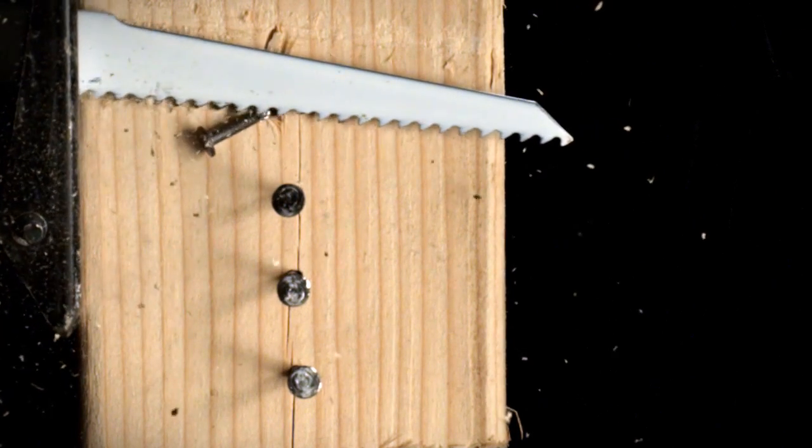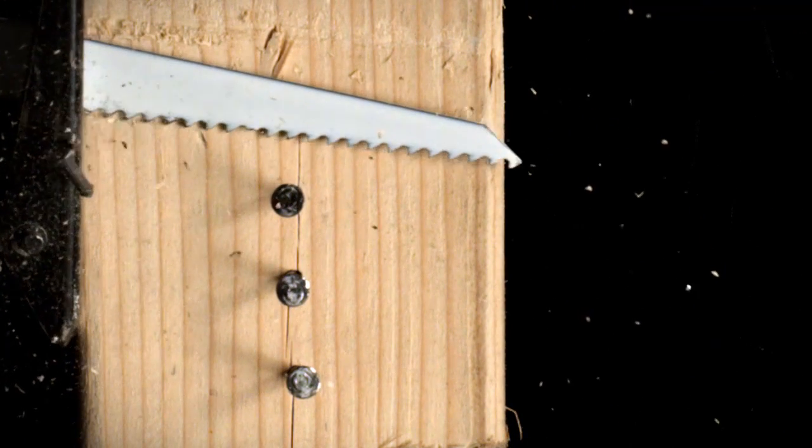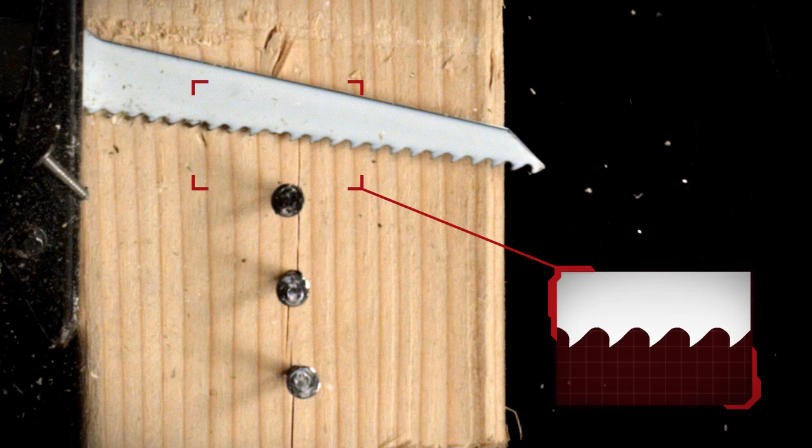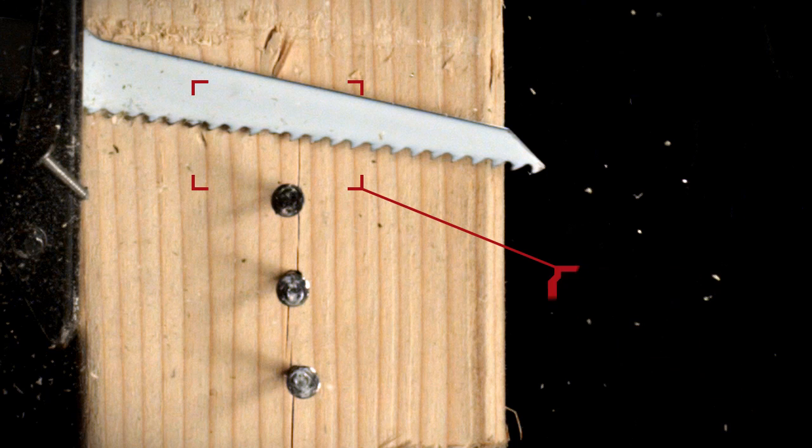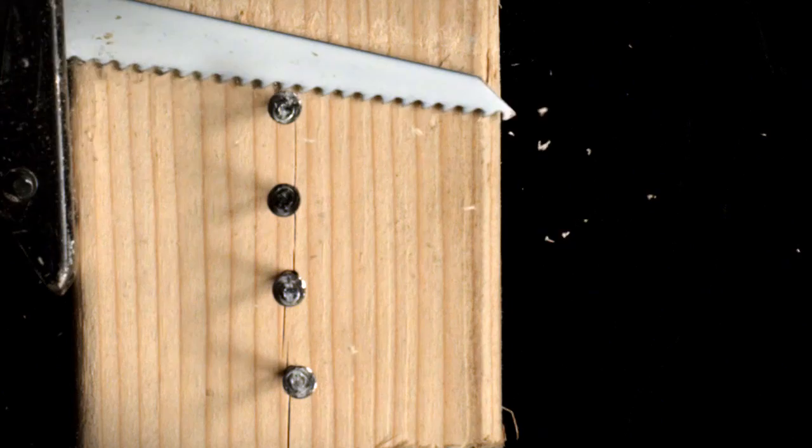Some materials are tough enough to cause severe damage to certain blades. For example, attempt to cut exposed nails with a blade that has an aggressive tooth pattern and you can literally rip the teeth off the blade.